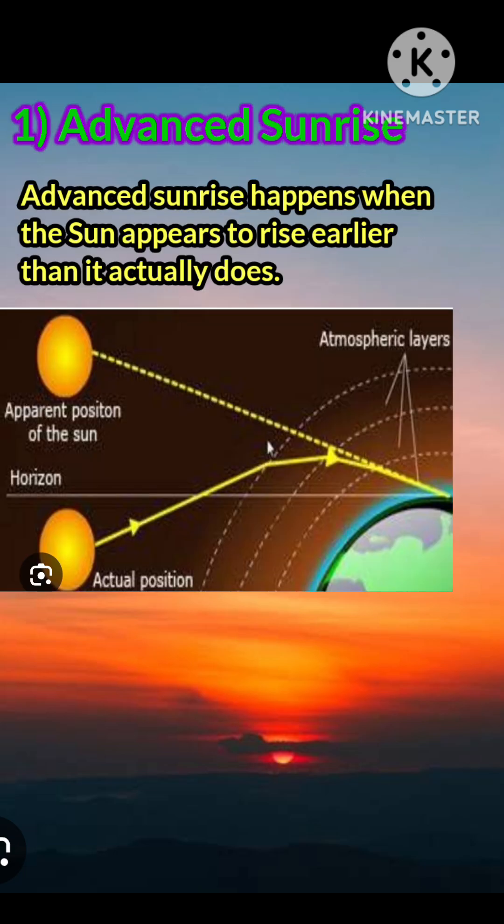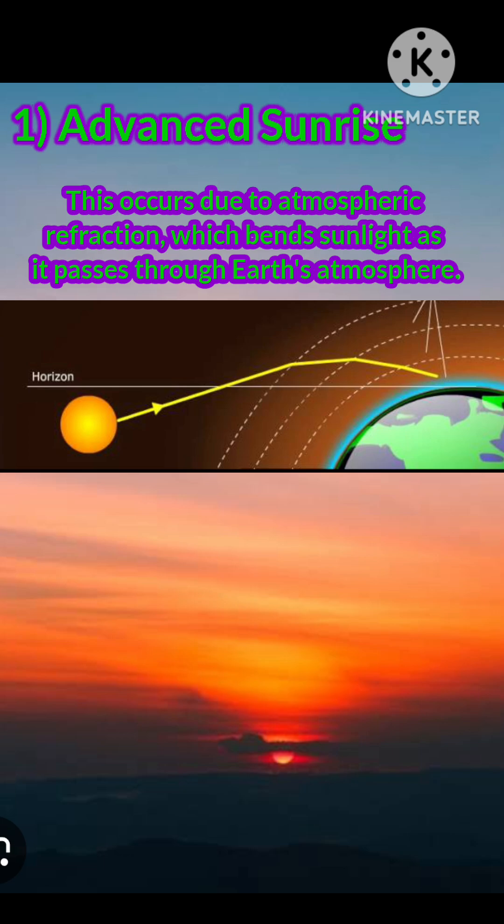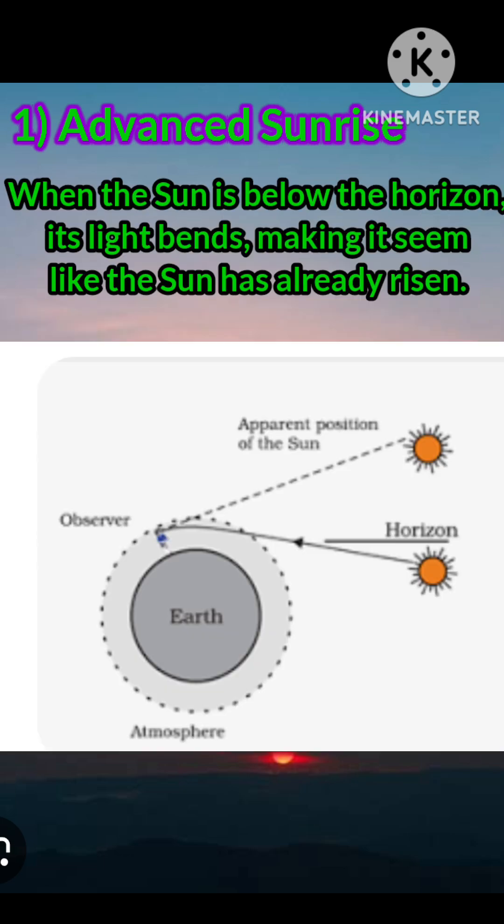Advanced sunrise happens when the sun appears to rise earlier than it actually does. This occurs due to atmospheric refraction which bends sunlight as it passes through Earth's atmosphere. When the sun is below the horizon, its light bends.